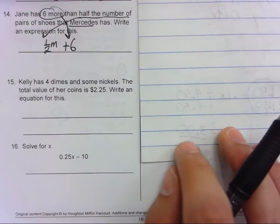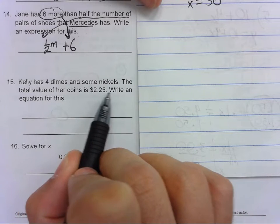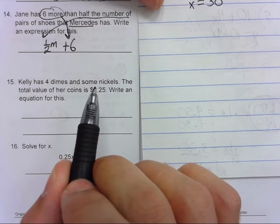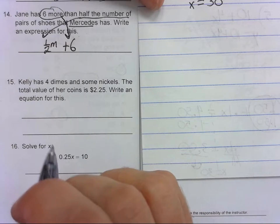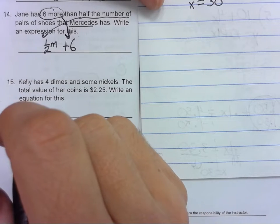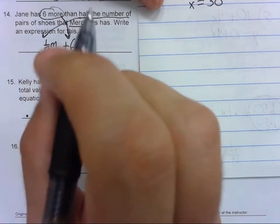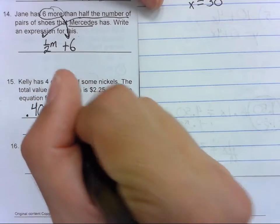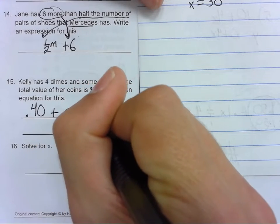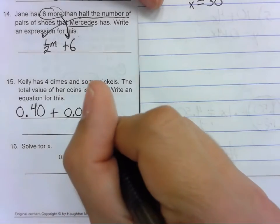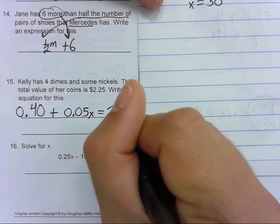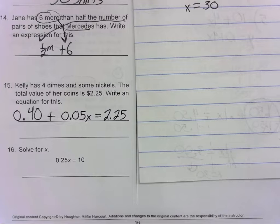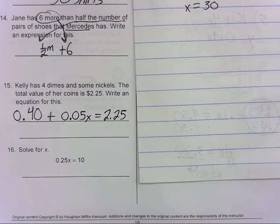Problem 15: Kelly has four dimes and some nickels. Total value is two dollars and twenty-five cents. Write an equation for this. So it's just telling us to write an equation. She has four dimes, so that value is—a dime is ten cents, so point four or point forty, forty cents. And some nickels. Each nickel is five cents. We don't know how many, so we put an x. The total value is two dollars and twenty-five cents. And that's it for that problem because it's not saying to solve it, just wants an equation.